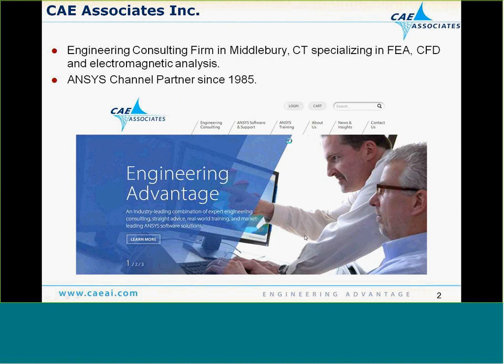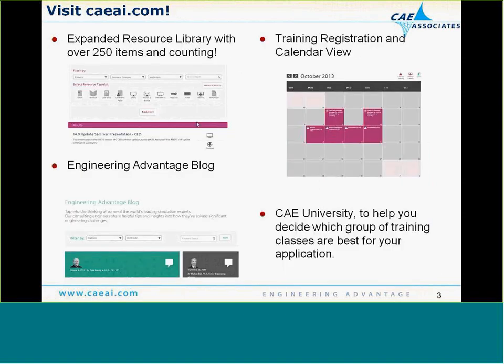For those of you who aren't familiar, CA Associates is an engineering consulting firm in Middlebury, Connecticut, and we specialize in finite element analysis, CFD analysis, and electromagnetic analysis. We've been an ANSYS channel partner since 1985. I recommend you take a look at our website, CAEAI.com.